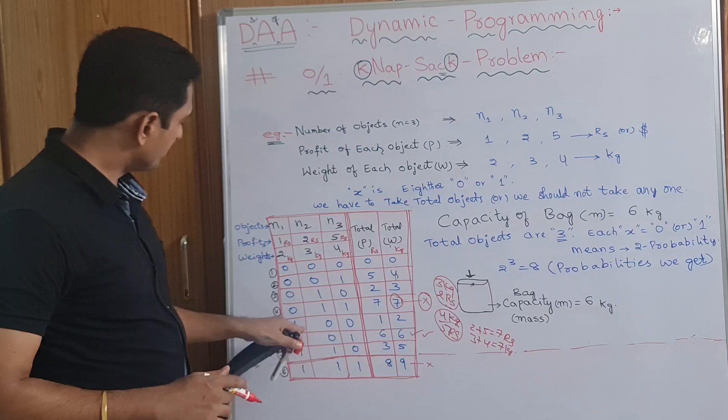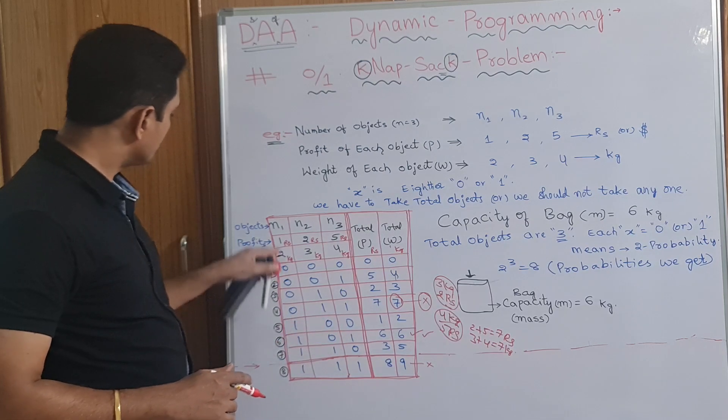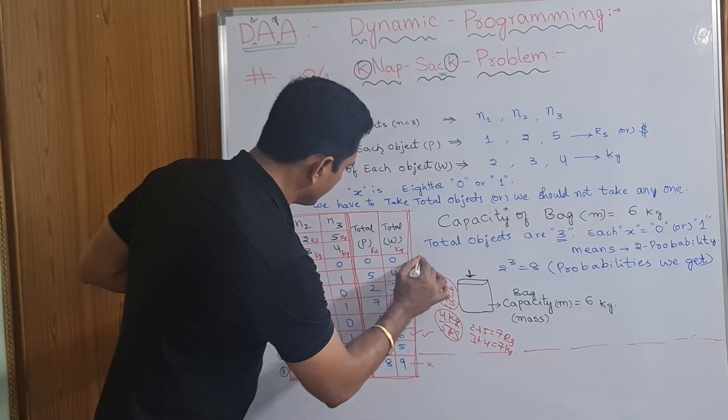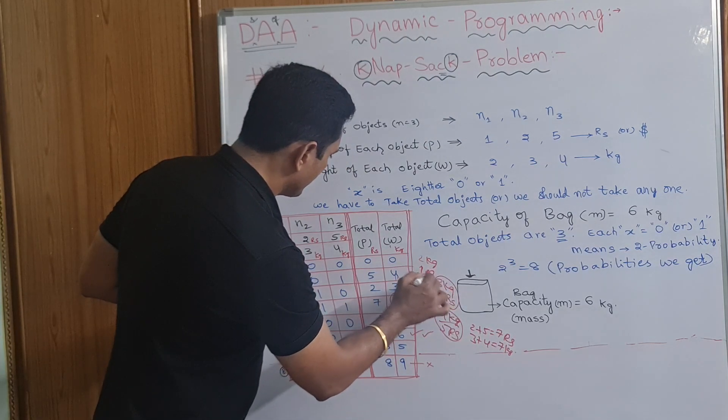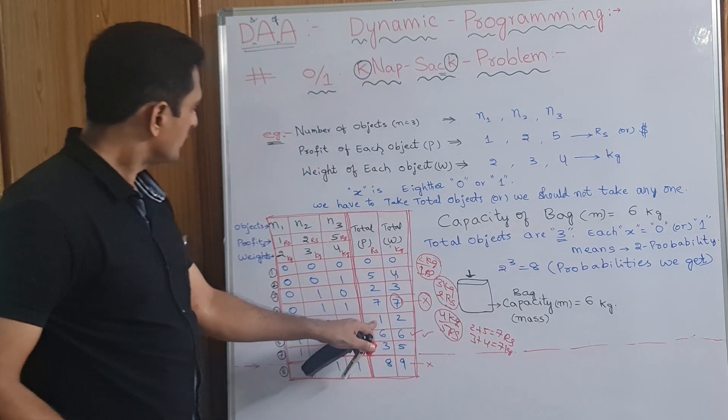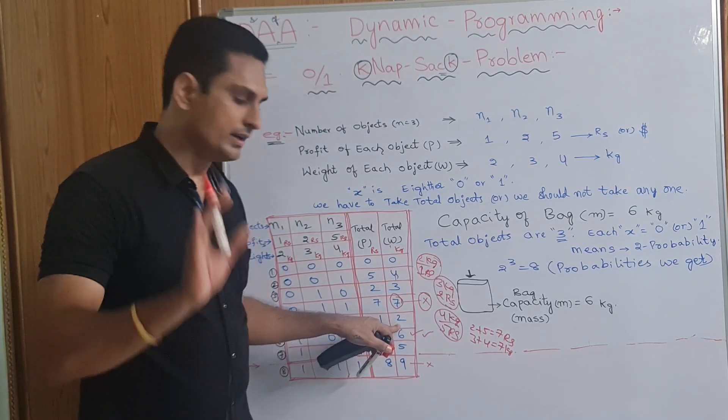So, fifth one. 1, 0, 0. 1 means this one. 2 kgs of the bag filled. 2 kgs. And 1 rupee we will get. Very less. 1 rupee profit we will get. 2 kgs of the bag filled.